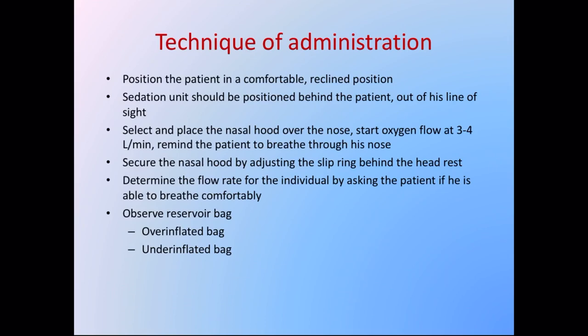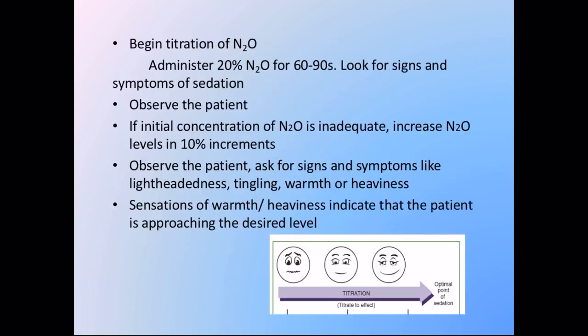Observe the reservoir bag to monitor the patient's respiratory rate, then begin titration of nitrous oxide. Start by administering 20% nitrous oxide for 60–90 seconds and observe the patient for signs and symptoms of sedation. If the initial concentration is inadequate, increase nitrous oxide levels in 10% increments only. Signs and symptoms to test for include lightheadedness, a tingling sensation, and warmth or heaviness — sensations of warmth or heaviness indicate the patient is approaching the desired level of sedation.